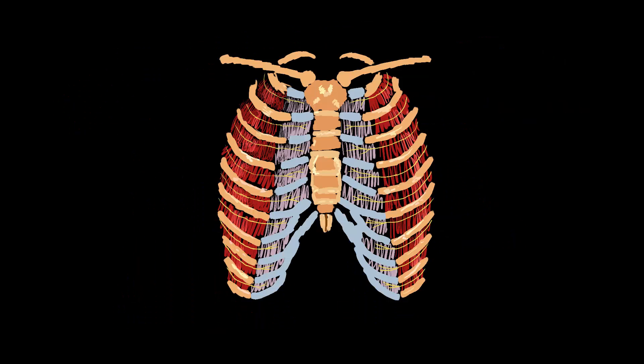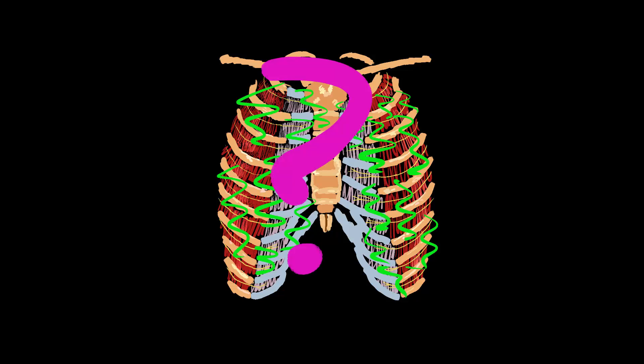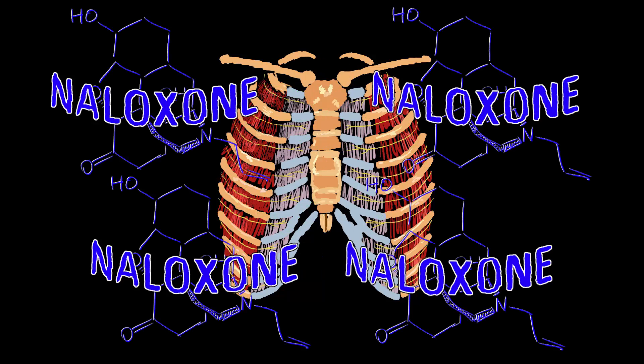Precautions: look out for chest wall rigidity — a side effect involving involuntary tightening of the chest wall muscles so severe that it stops the patient's breathing and renders ventilation ineffective. Usually resulting from large doses or rapid administration, it can occur with small slow doses too. Although the mechanism remains unconfirmed, we can correct this with the antidote naloxone, or if necessary, a neuromuscular blocking agent to shut down the nerves and muscles causing this potentially deadly side effect.